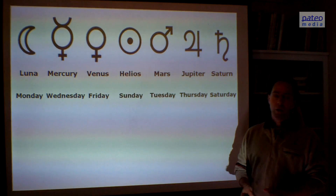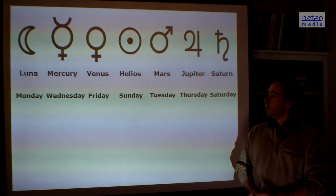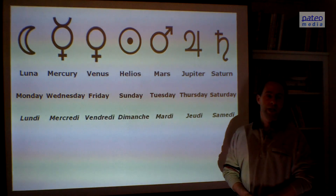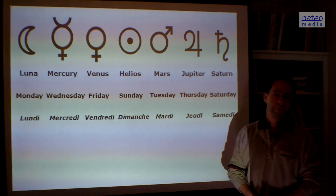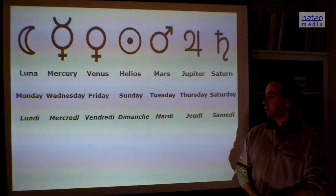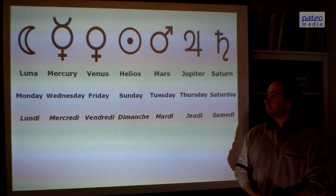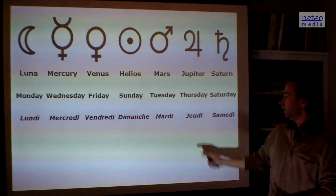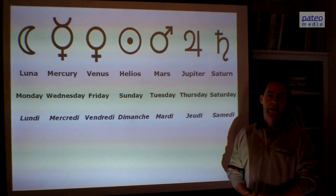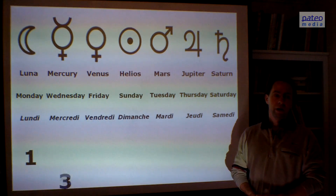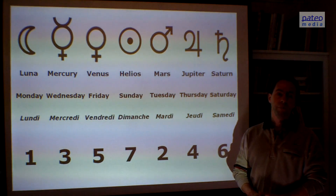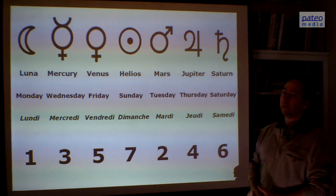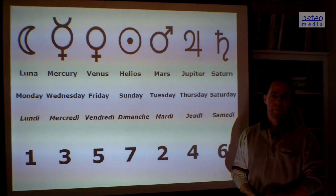Monday — we honor the moon, which I call Luna. On Wednesday we honor Mercury, but it is not really clear in English, so let's look at the French words. In French, Wednesday is Mercredi, and now we see the relation to Mercury. On Friday we honor Venus, or Vendredi in French. On Sunday we of course honor the sun — I call the sun Helios. On Tuesday, or Mardi in French, we honor the planet Mars. On Thursday, or Jeudi in French, we honor the planet Jupiter. And finally, on Saturday, we honor Saturn. The order in which the planets are mentioned is the order of relative movements — the number of days they need to complete a full circle. The smallest circle we find with Luna, and the longest one we find with Saturn.